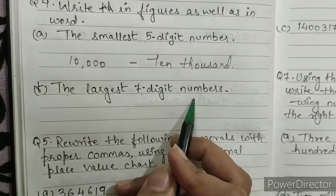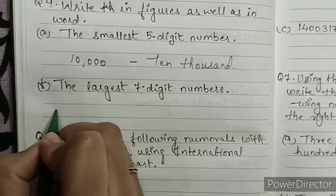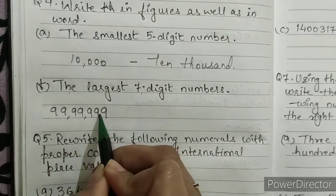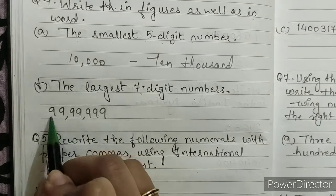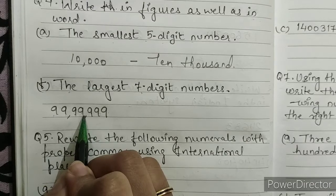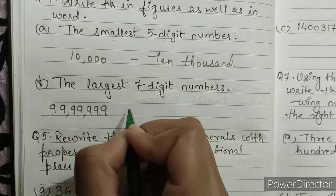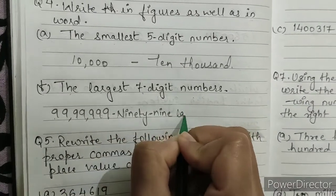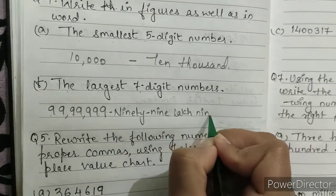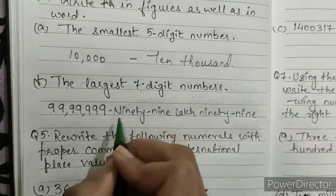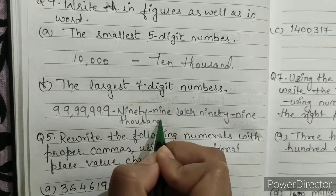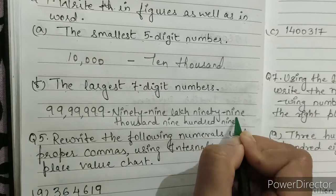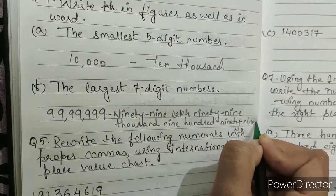Part f) the largest 7-digit number. The largest 7-digit number is 99,99,999 — ones, tens, hundreds, comma, thousands, ten thousands, comma, lakhs, ten lakhs. We write it as 99,99,999. This is our answer.